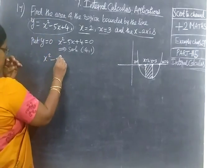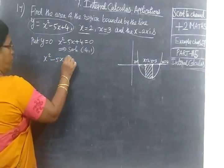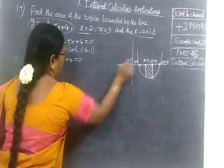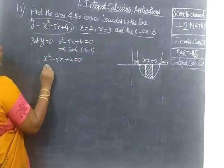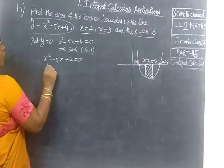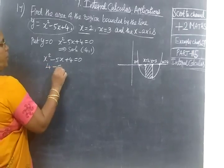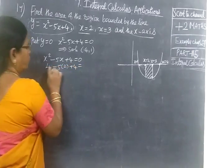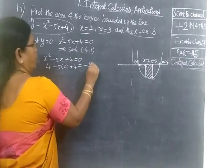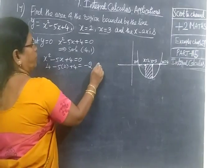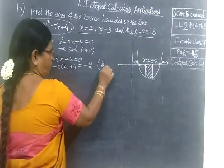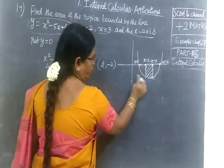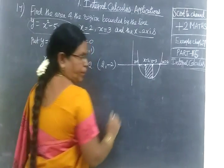For x equal to 2: y equals 4 minus 5 times 2 plus 4, so y equals minus 2. The y-value at x equal to 2 is minus 2.